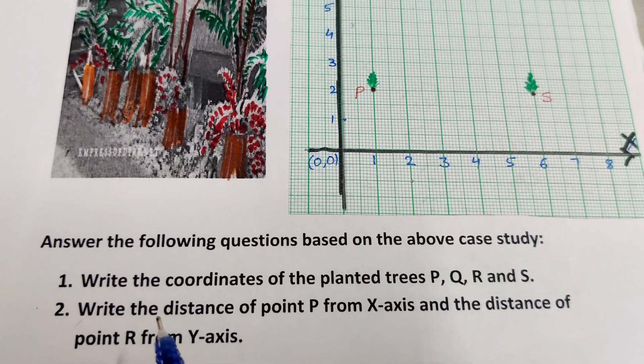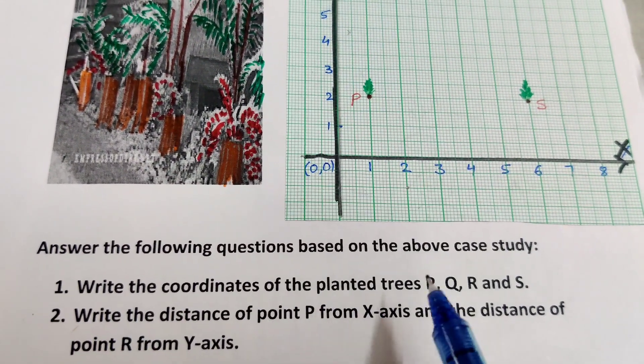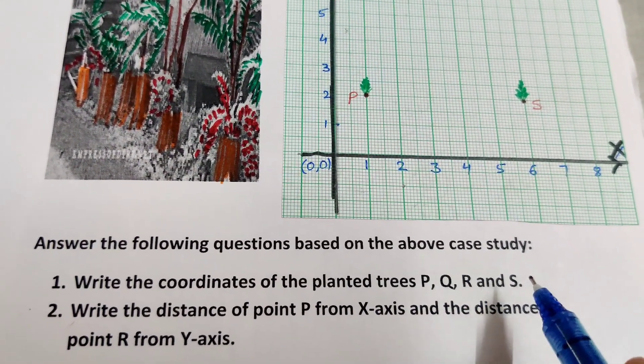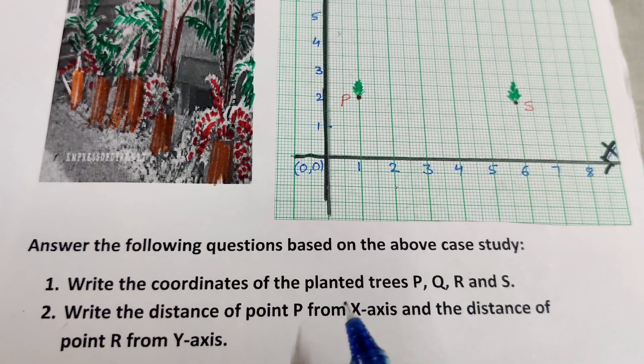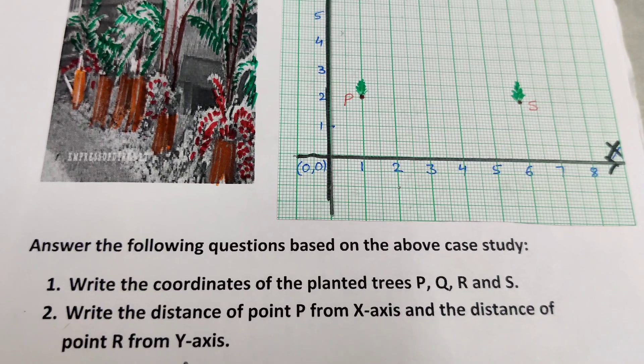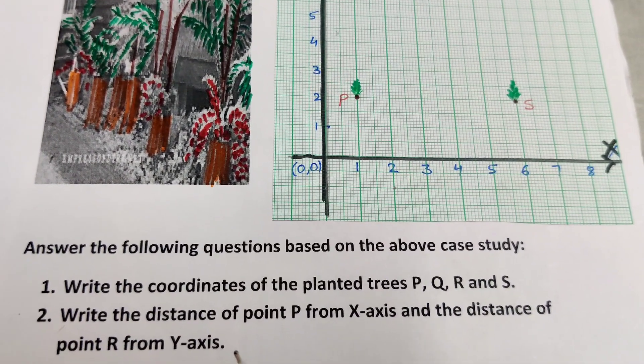Question one is this: Write the coordinates of the planted trees P, Q, R and S. And the second one is write the distance of point P from x-axis and the distance of point R from y-axis.